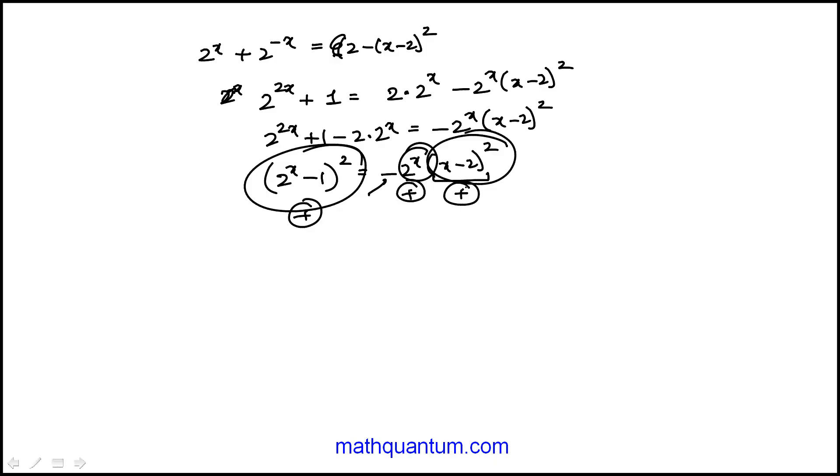The other direction that I took was to add 2 to both sides into that original equation: 2 to the x plus 2 to the minus x plus 2, and then 4 minus x minus 2 squared. Now what's the logic of that?